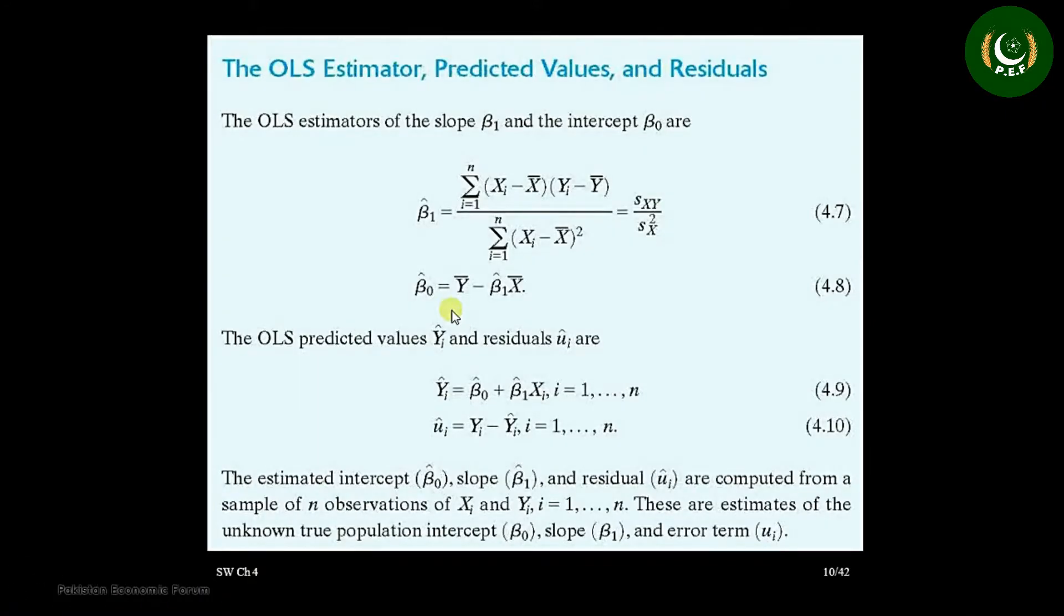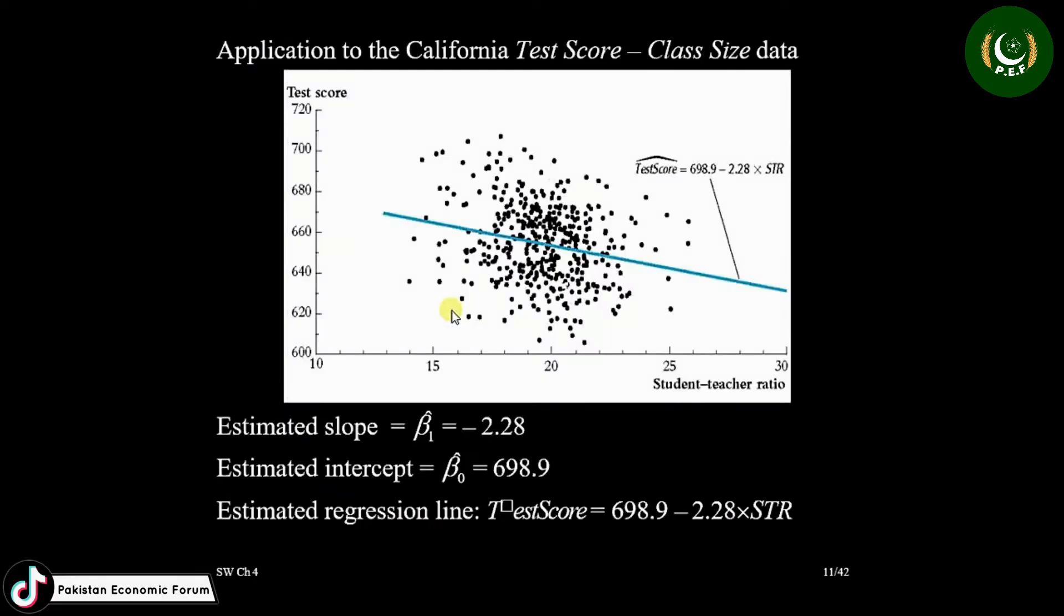We have already discussed this in our previous video. Once you have the best guess for intercept and slope equal to minus 0.28 and 698.9, means if you use any values other than these two values for intercept and slope your sum of squares of residuals will not be as small as by using these two values. What is their interpretation?